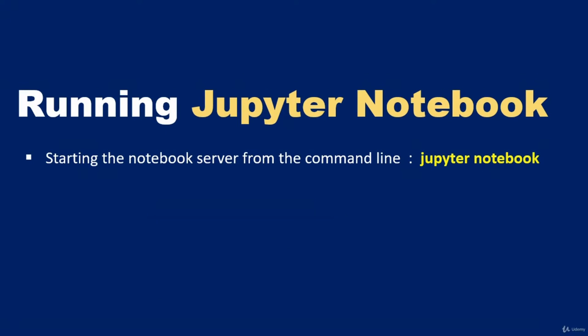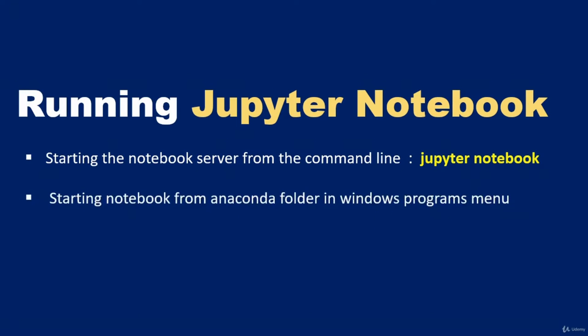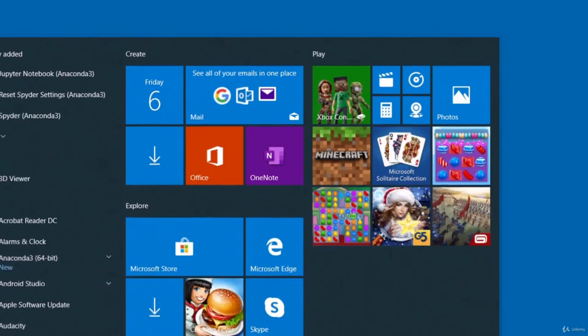The other way to start the Jupyter Notebook server is from the All Programs menu on your Windows-based computer. If you go to the Anaconda folder within All Programs, there should be an icon for Jupyter Notebook. You can run it from there as well. Once the Jupyter Notebook server is started, it opens up the Jupyter Notebook in your default web browser on localhost, and the port it uses is 8888.